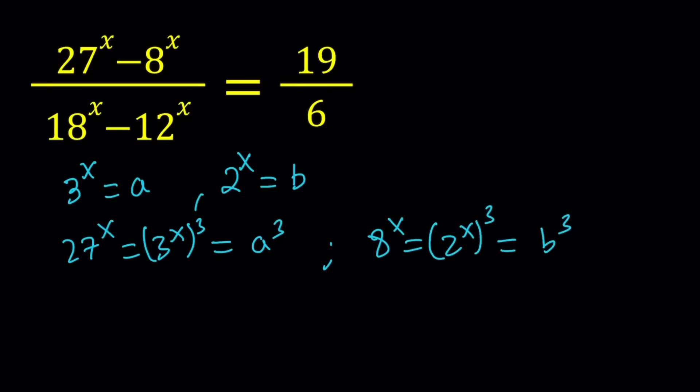And then we can do the same thing at the bottom, 18 and 12. 18 to the x can be written as 2 times 3 to the second because 2 times 9 is 18. You can distribute that and notice that 3 to the power 2x can be written as 3 to the power x squared. Therefore, this is equivalent to b times a squared.